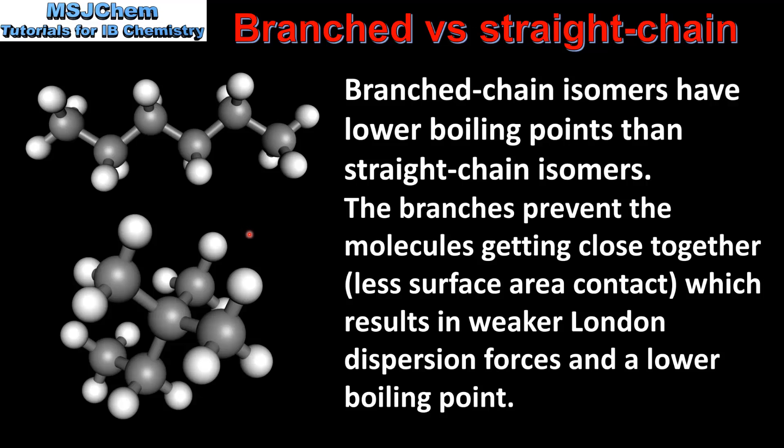So when we compare branched and straight chain isomers, the straight chain isomer will have a higher boiling point, and the branched chain isomer will have a lower boiling point.